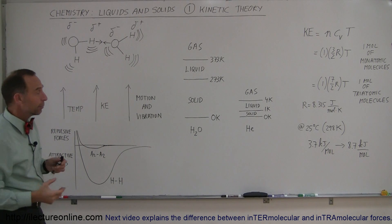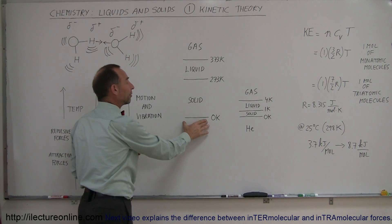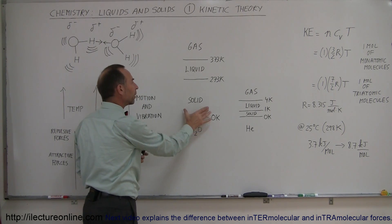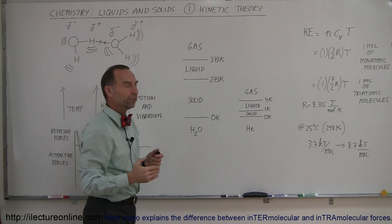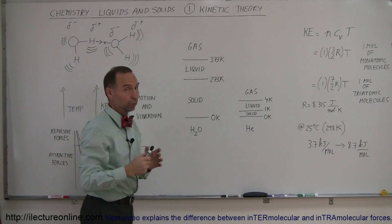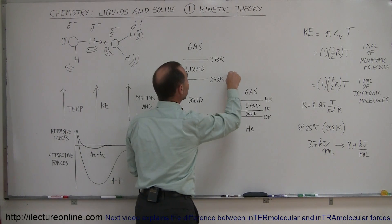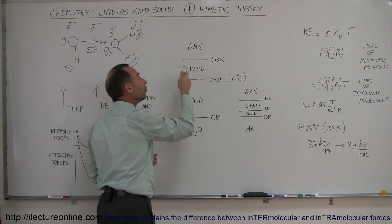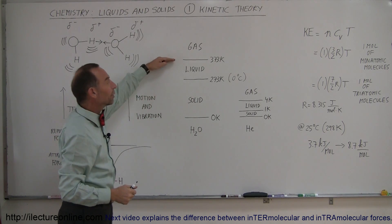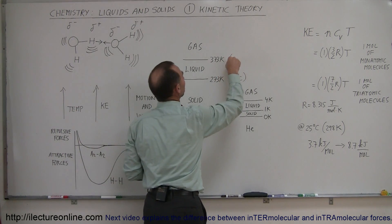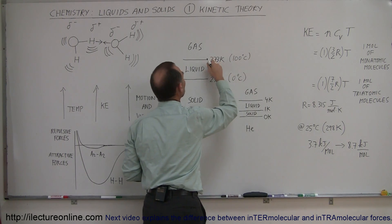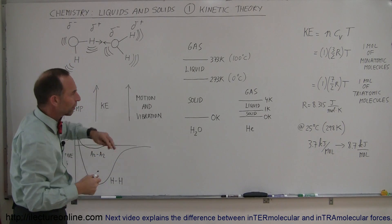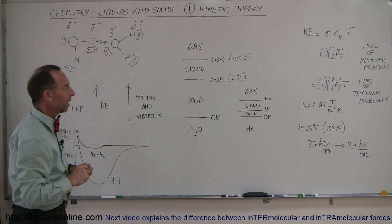For example, if we look at water: water will be solid starting at zero Kelvin — absolute zero, the coldest temperature that can exist — all the way up to 273 Kelvin, which is the same as zero degrees centigrade. That's where solid water turns into liquid water. Then another hundred degrees later, at 100 degrees centigrade, the liquid turns into a vapor, or gas.